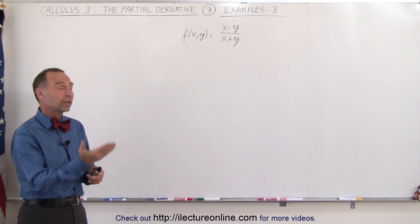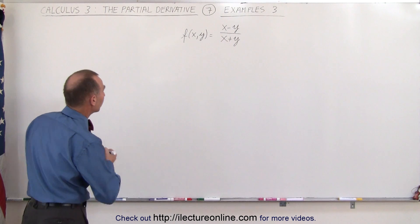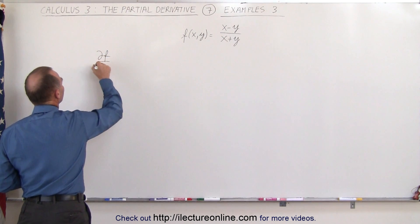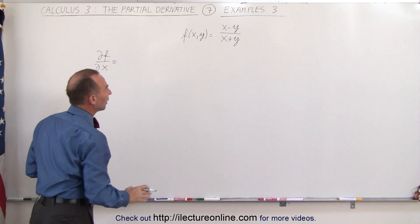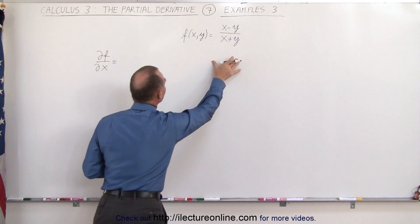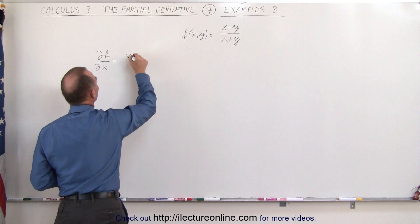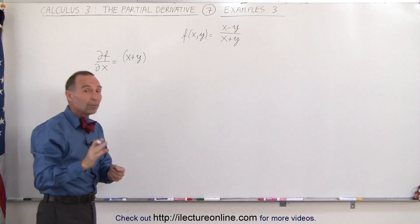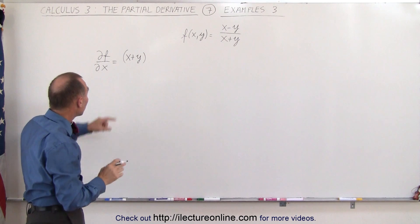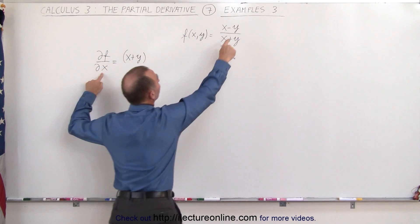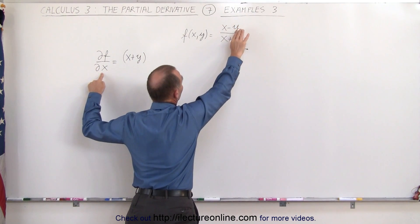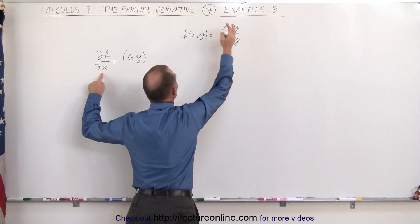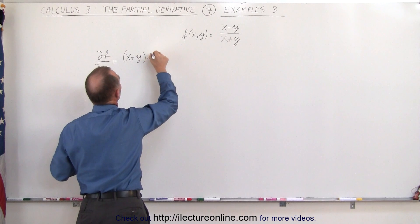We're going to first do it with respect to x, and then with respect to y. The partial derivative of the function with respect to x is equal to: since it's a quotient, we take the denominator, x plus y, times the derivative of the numerator — this is the partial derivative of the numerator with respect to x, so minus y is a constant and can be ignored because the derivative of a constant is 0, and the partial of x with respect to x is simply equal to 1, so that's times 1.